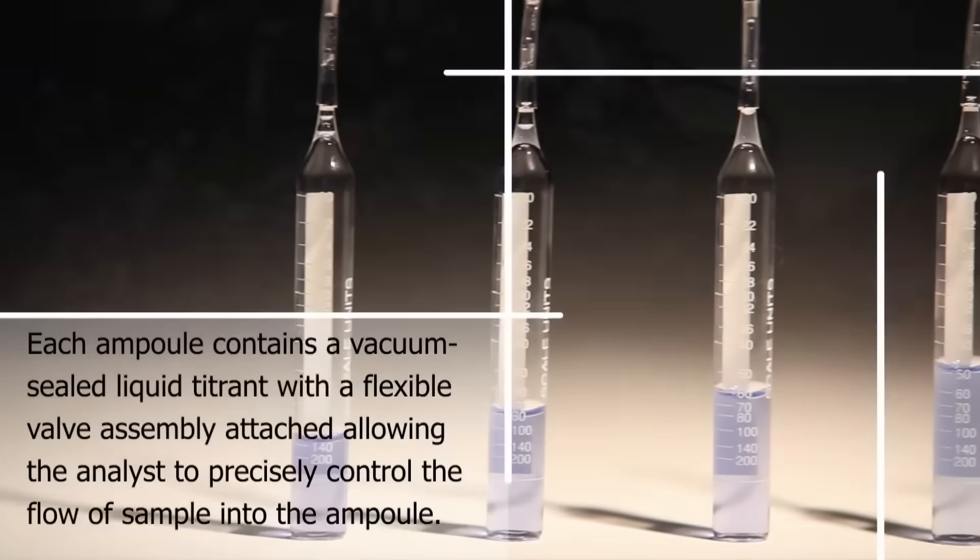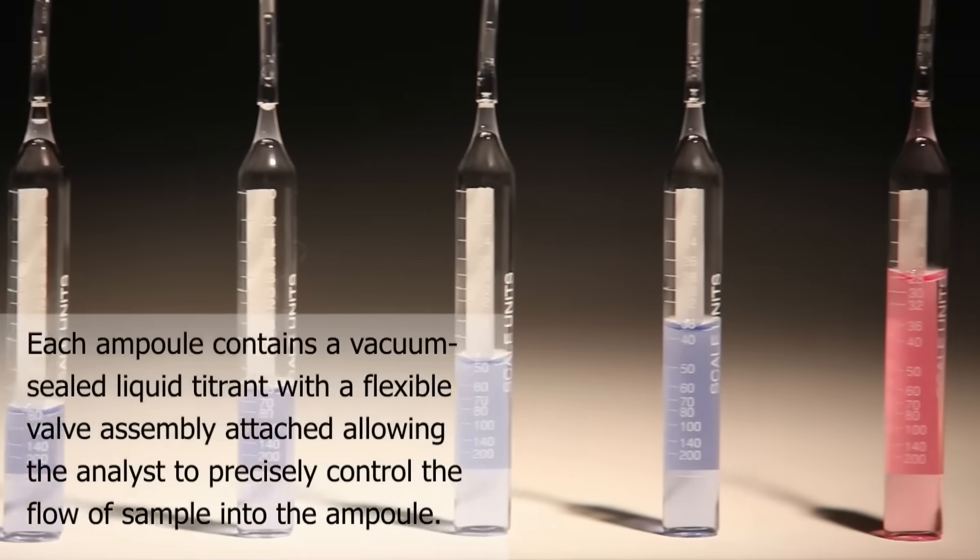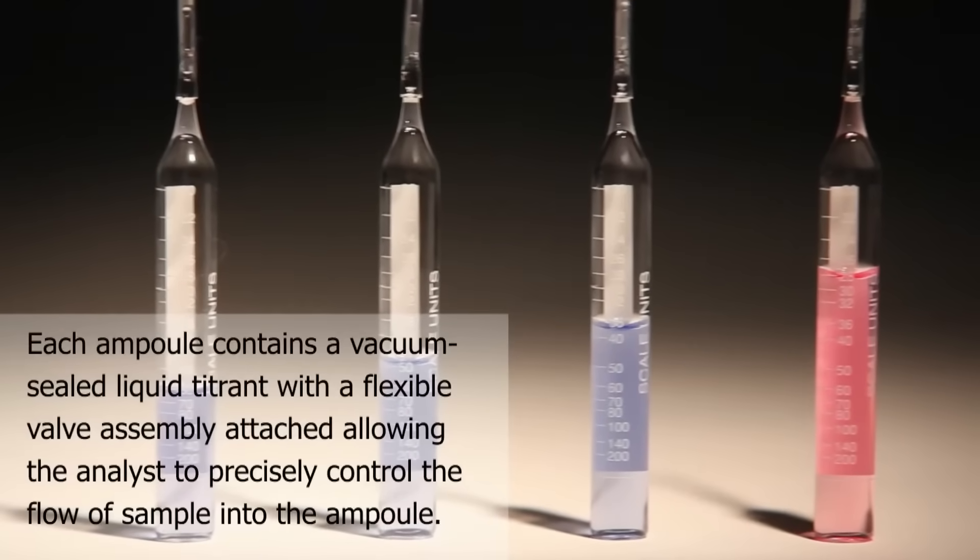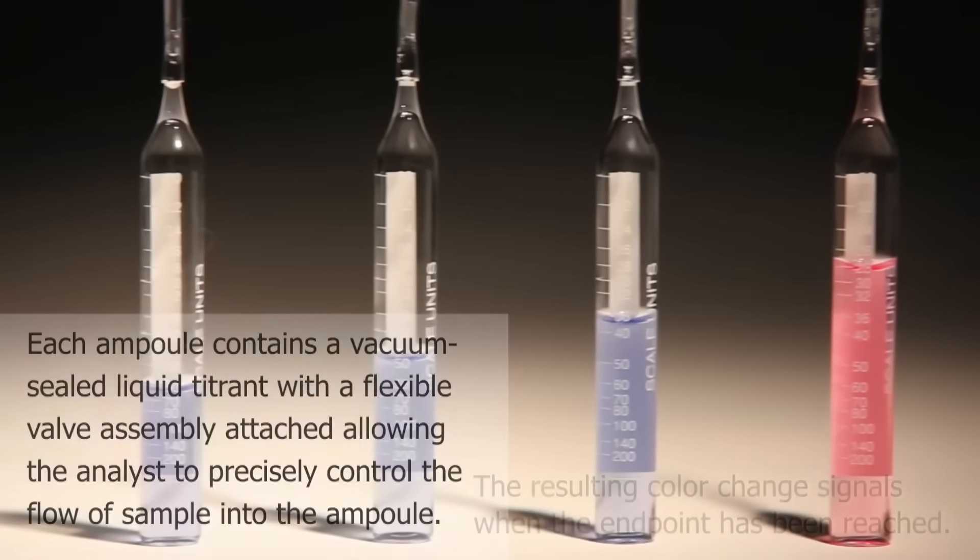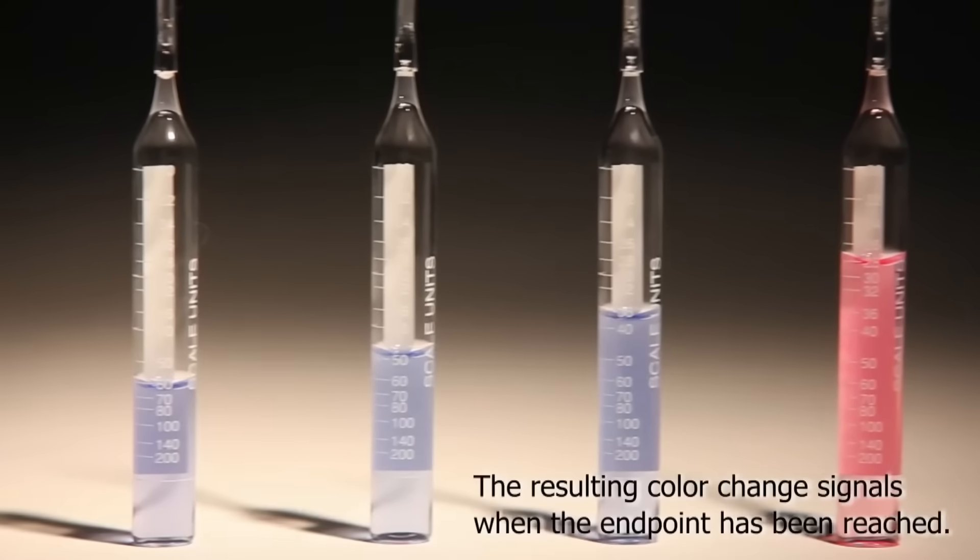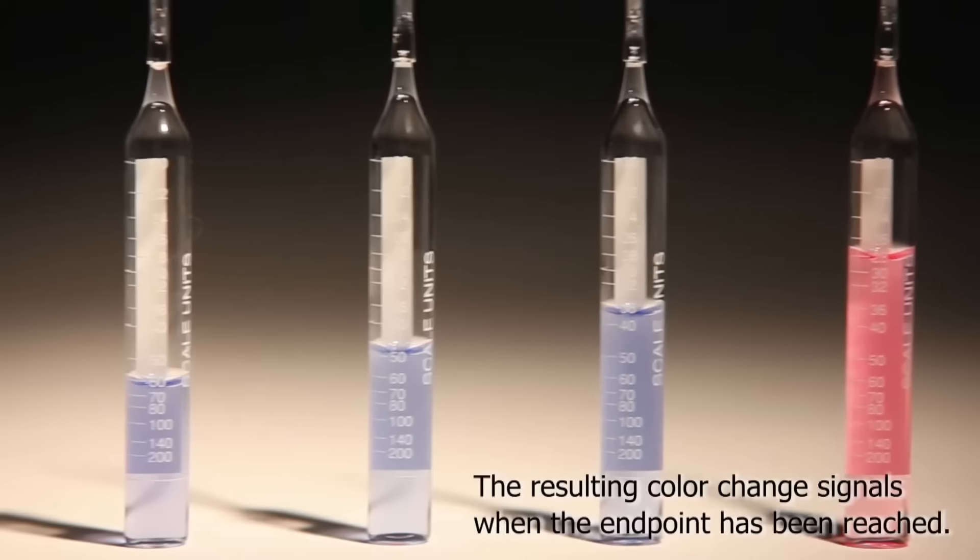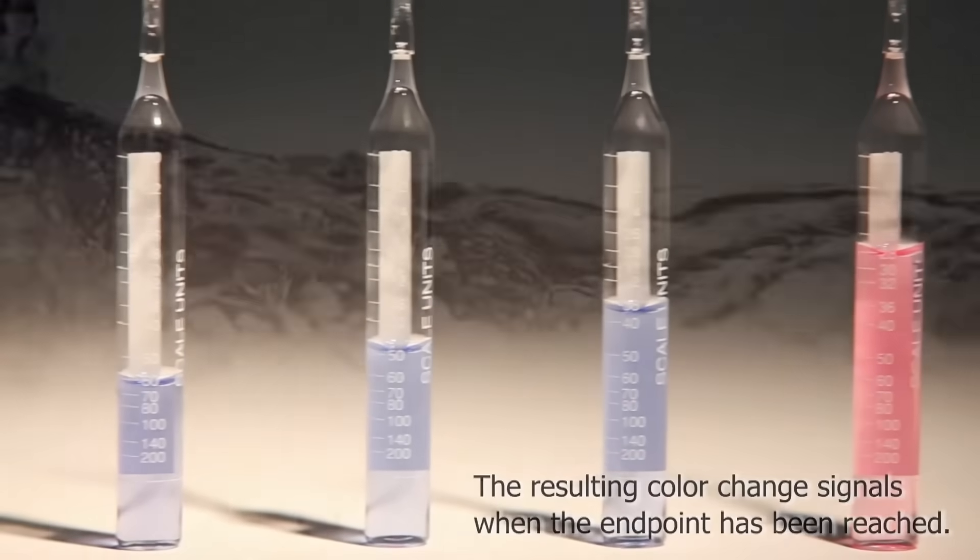Each ampoule contains a vacuum-sealed liquid titrant with a flexible valve assembly attached, allowing the analyst to precisely control the flow of sample into the ampoule. The resulting color change signals when the endpoint has been reached. For purposes of this video, we will be illustrating the total hardness test procedure.